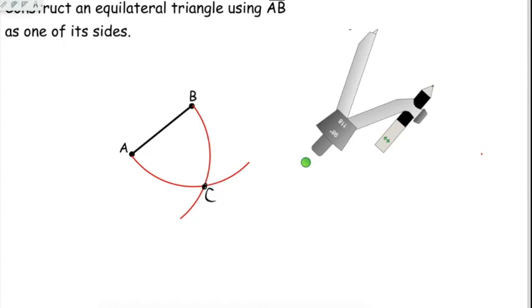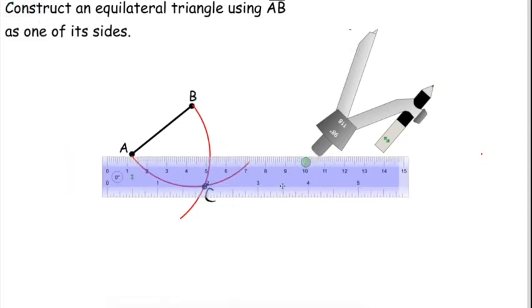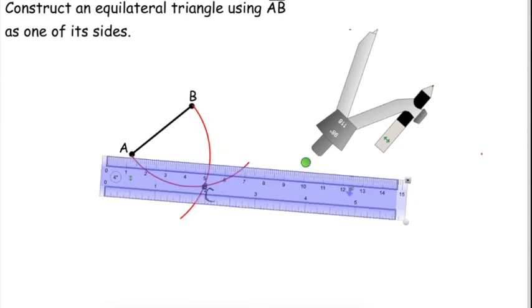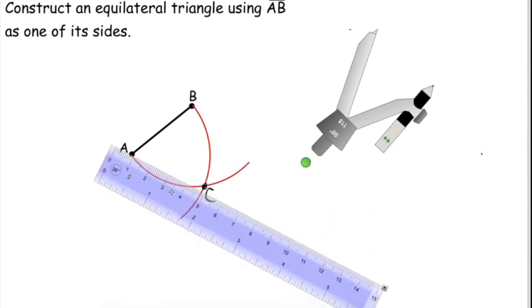Now we're going to get out our straightedge, and we're going to line it up from A to C, and then we'll line it up from B to C and draw our lines.